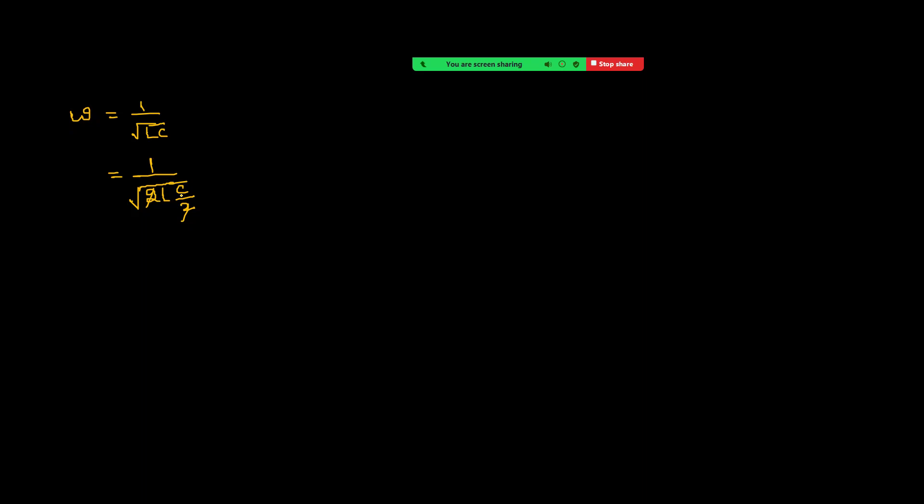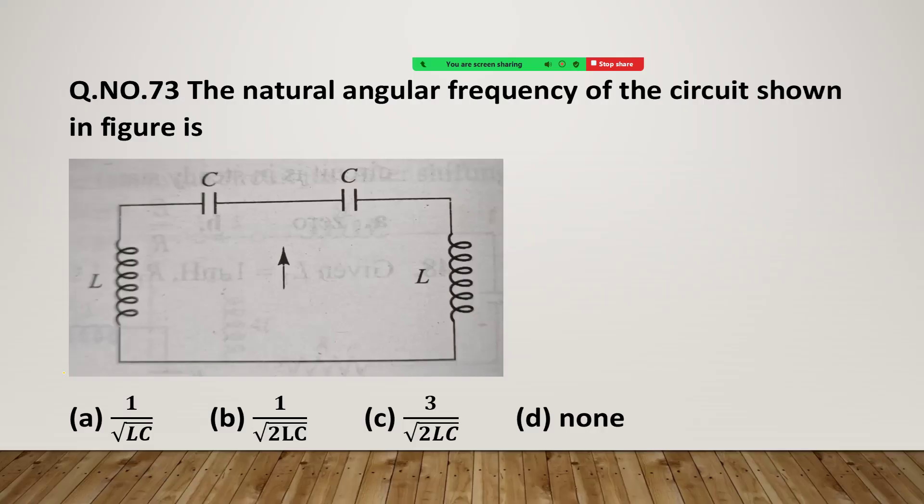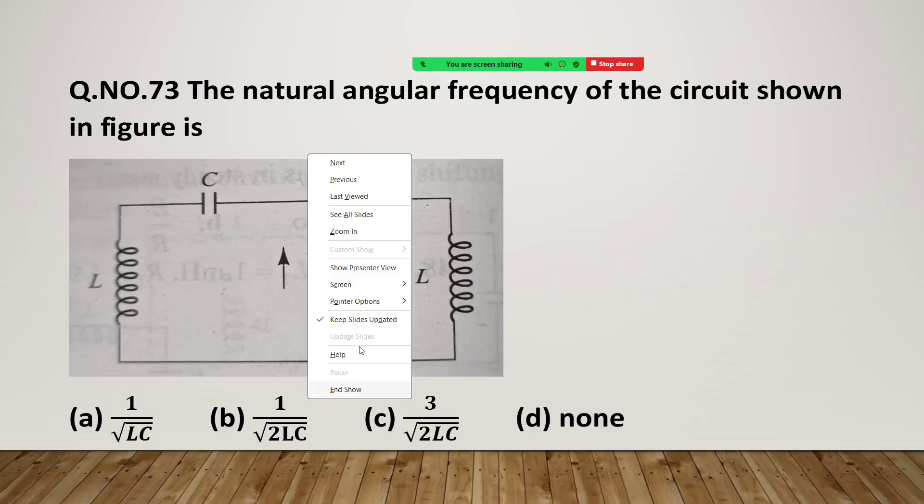We have to find across the capacitors what is equivalent inductance, and across the inductors what is equivalent capacitance. The correct option is A.